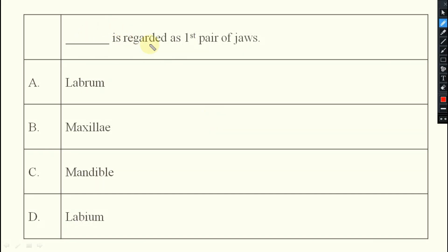Next question is, this is regarded as first pair of jaw. Labrum, maxilla, mandible, labium. So the option will be option C, that is your mandible.